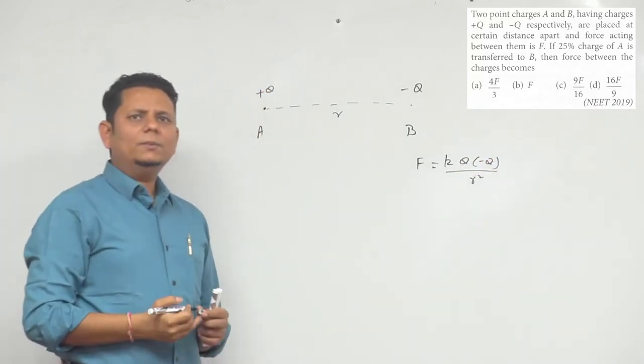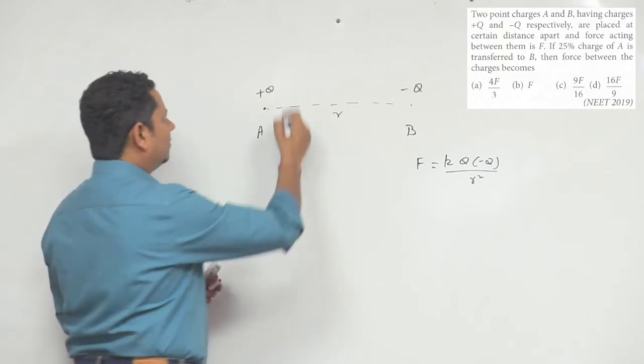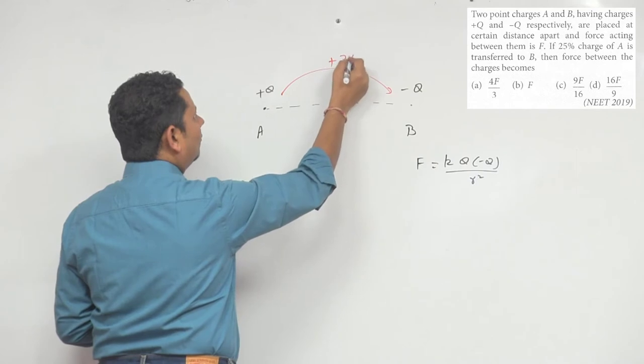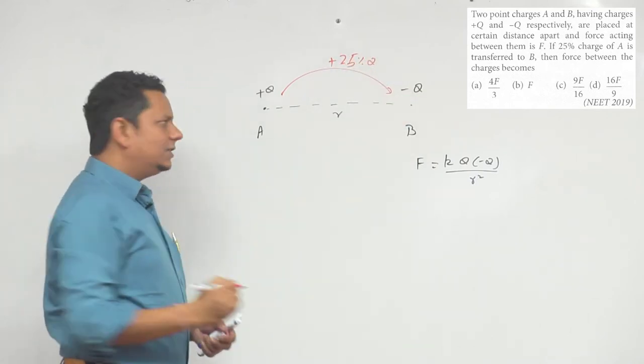Now we transfer 25% charge from A to B. So 25% of Q, we transfer. The net charge now